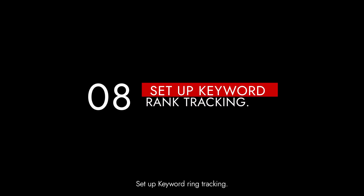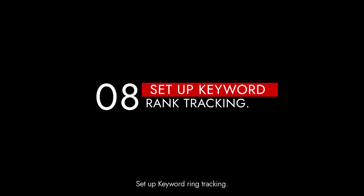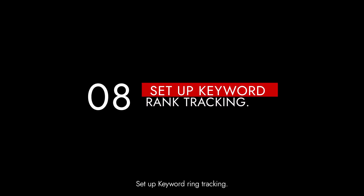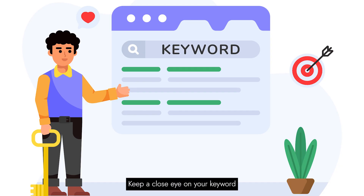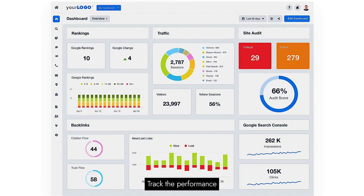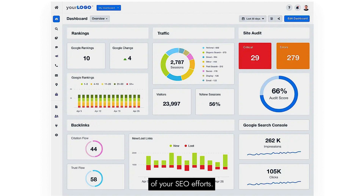Step 8: Set up keyword rank tracking. Keep a close eye on your keyword rankings. Track the performance of your target keywords to gauge the effectiveness of your SEO efforts.